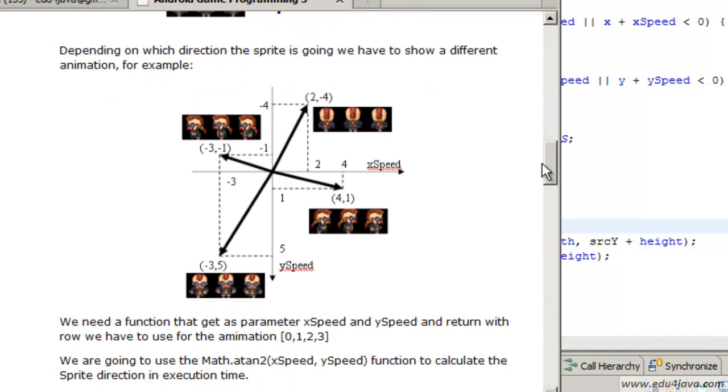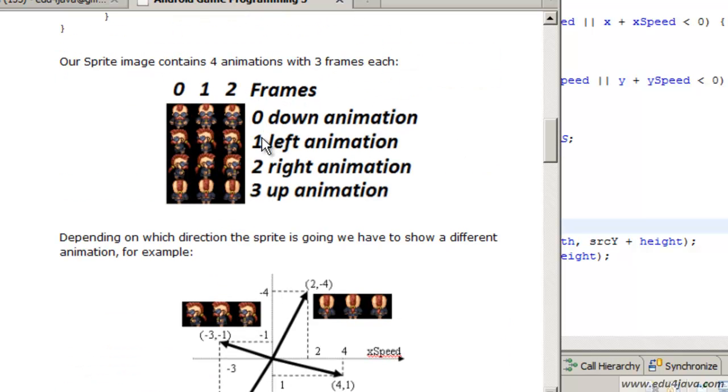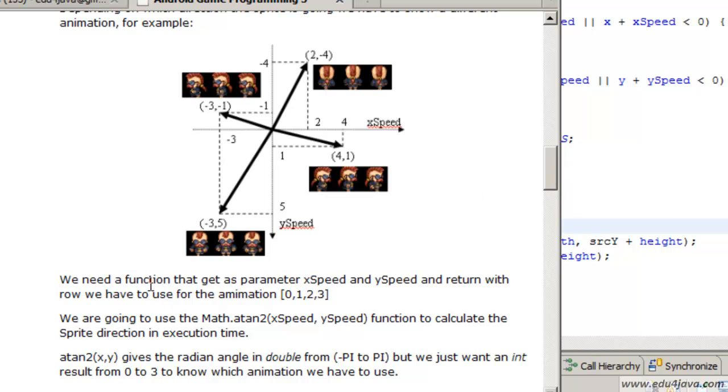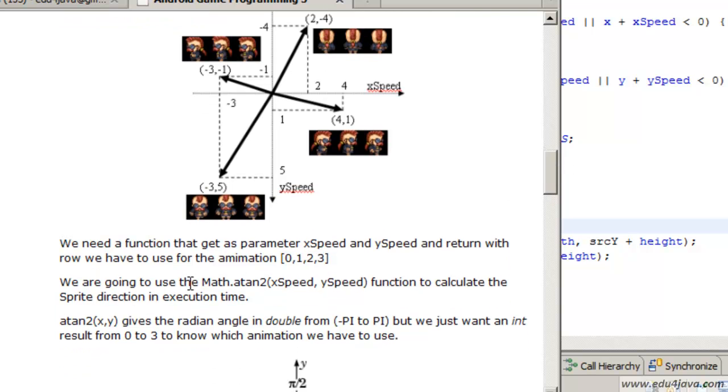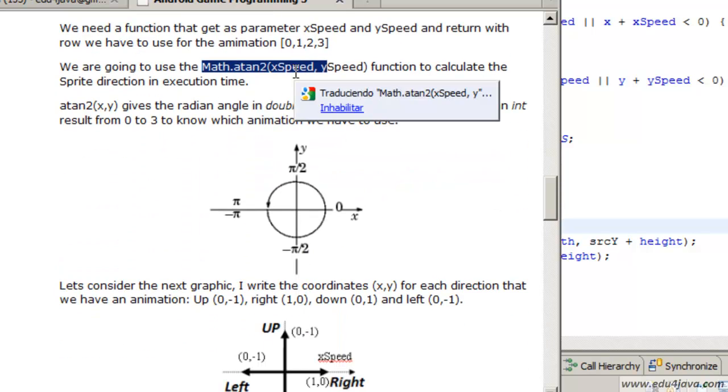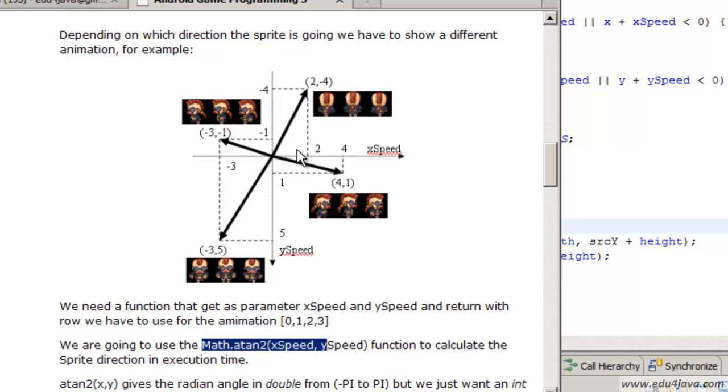The question is how do we for x and y know which one do we have to use: 0, 1, 2, 3? We need a function which will have as parameters x speed and y speed, and as a result 0, 1, 2, 3 corresponding to which one should we use. To create this method, I looked at math.atan2, which returns the radian. It gives us the angle.